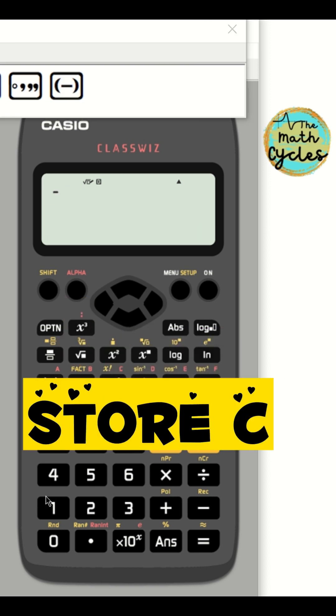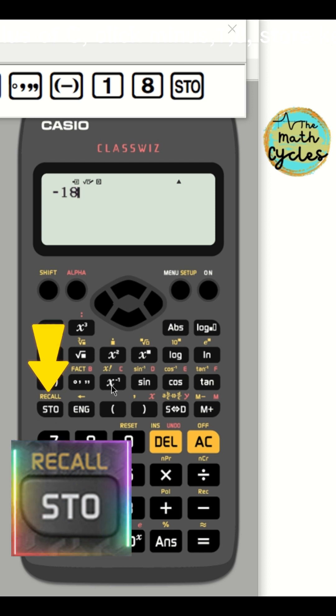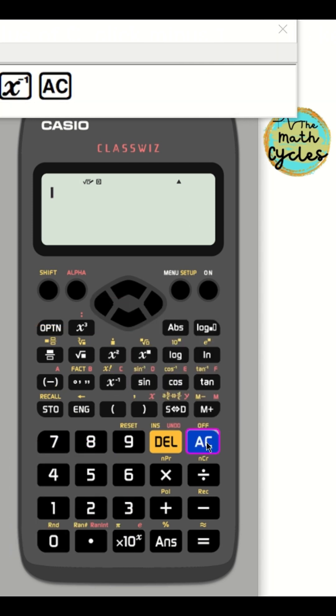And store the value of C. Click minus 1, 8, store key, then this key. Now, press AC key.